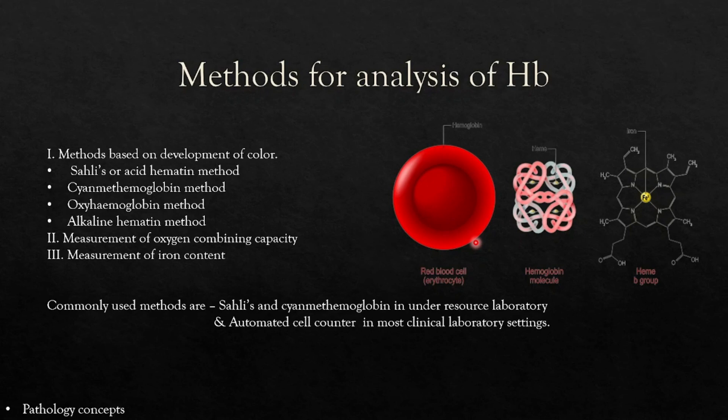Let's see the methods for analysis of hemoglobin. First is methods based on development of color: the basic method is Saheli's (acid hematin method), second is the cyanmethemoglobin method, third is the oxyhemoglobin method, and fourth is the alkaline hematin method. Second category is measurement of O2 combining capacity. Third is measurement of iron content. Commonly used methods are Saheli's and cyanmethemoglobin in under-resourced laboratories, and automated cell counters in most clinical laboratory settings.